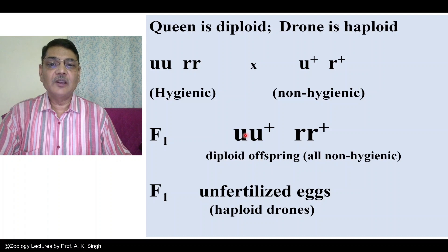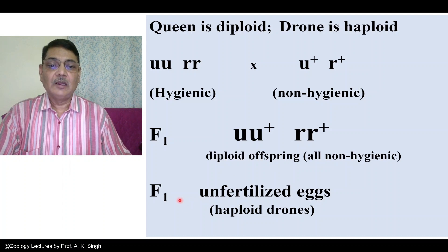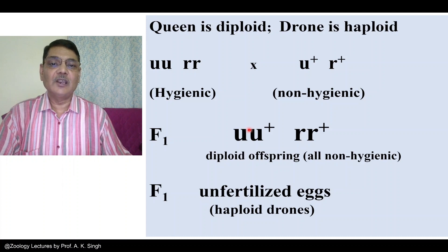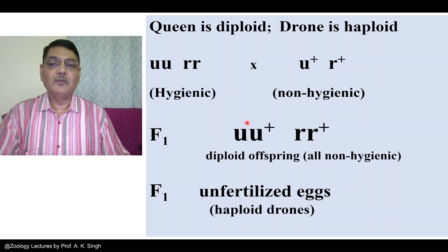A female of genotype U U-plus and R R-plus will lay four different types of unfertilized eggs. These unfertilized eggs will be either UR, U R-plus, U-plus R, or U-plus R-plus. Accordingly, if these haploid unfertilized eggs develop into males, four different types of drones will be formed, and we can cross those males with a specific type of queen to see the results.